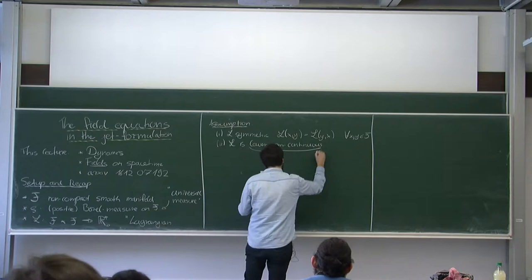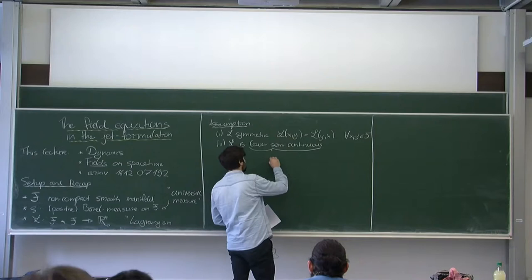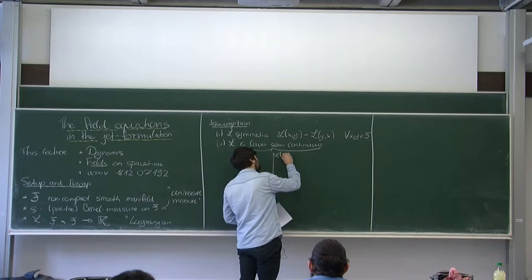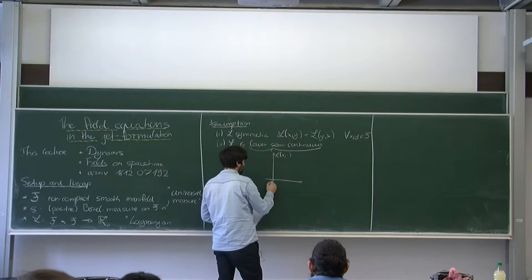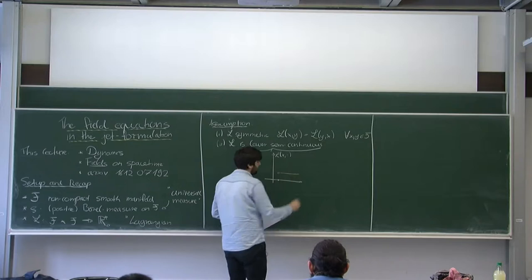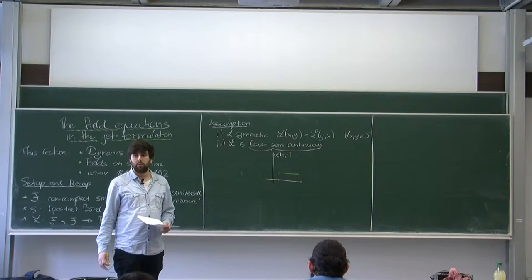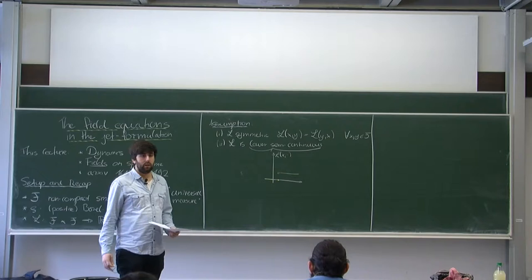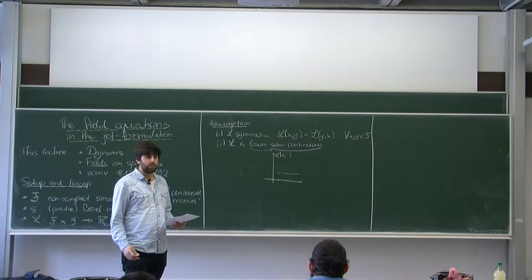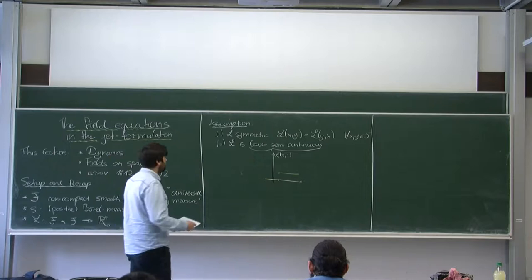A lower semi-continuous function is a function which can jump up but cannot jump down. The Lagrangian from yesterday was given in terms of absolute values of eigenvalues of the closed chain, and it is in fact Lipschitz continuous — lower semi-continuity is even more general than Lipschitz continuity. We work with this because there are several examples which are only lower semi-continuous. Just remember: it can jump up. These assumptions are written down so that things are well defined, but they are not essential — you can also ignore them if you prefer.